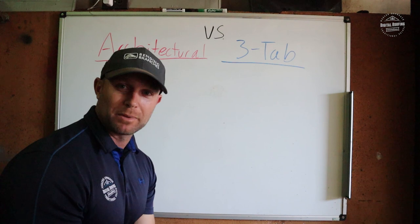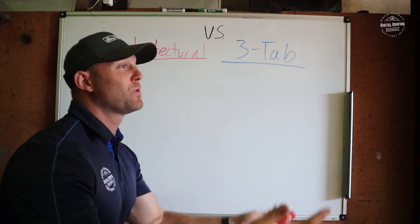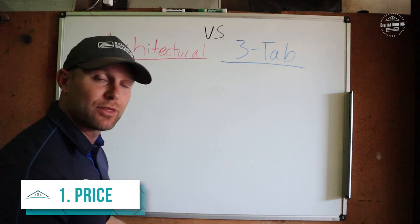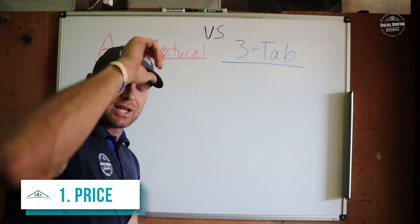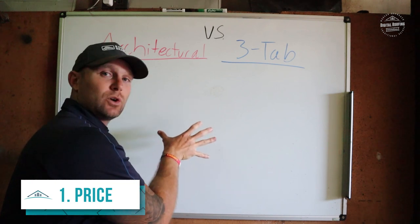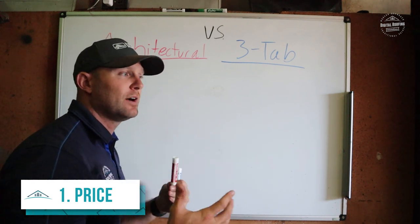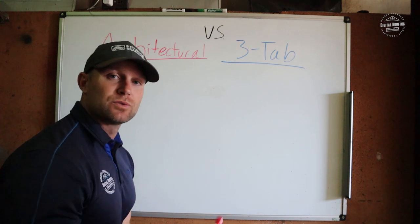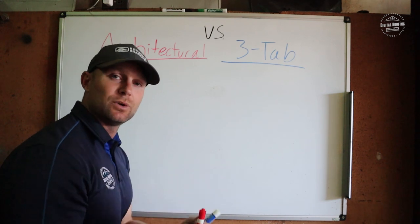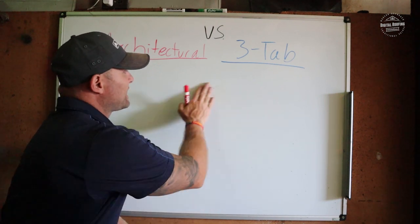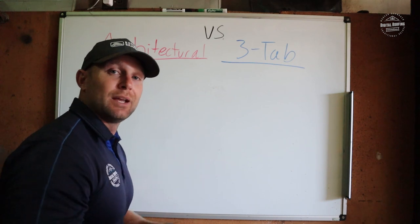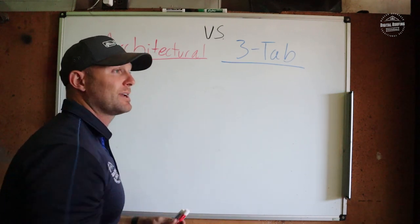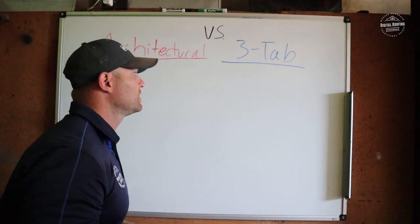I apologize about this being a little dark because my studio lighting is not working, so we're having to use natural light from the sun. Let's get into price — the difference between architectural and three-tab. The reason we're going to use the board is so you can see why the architectural shingle costs a little bit more. When we do roofing, we use what's called squares. Most residential roofs are anywhere between 30 and 40 squares, so we'll use 40 since that's a nice easy number.